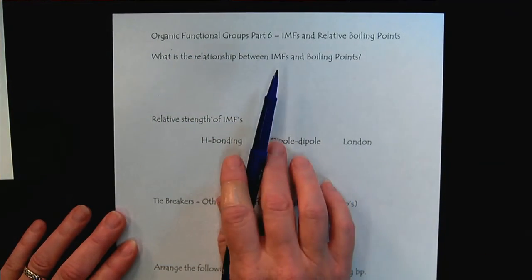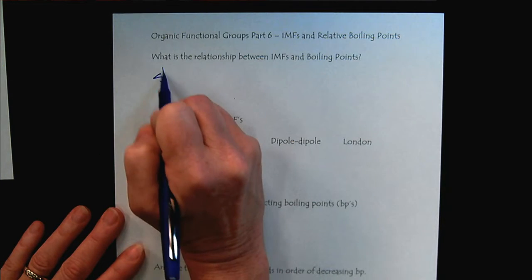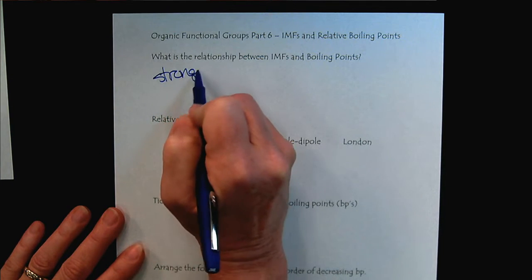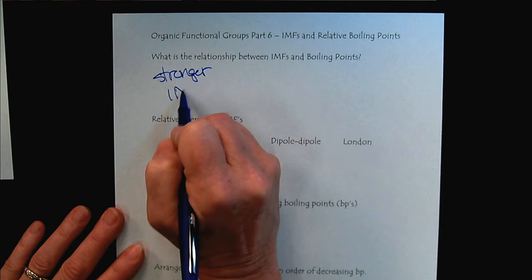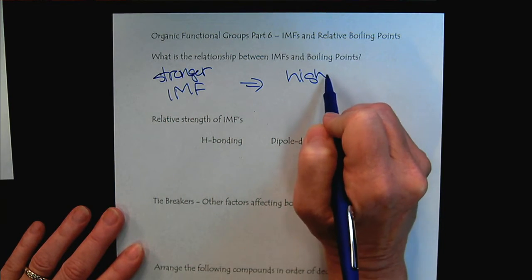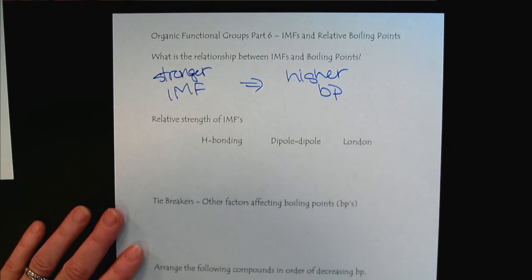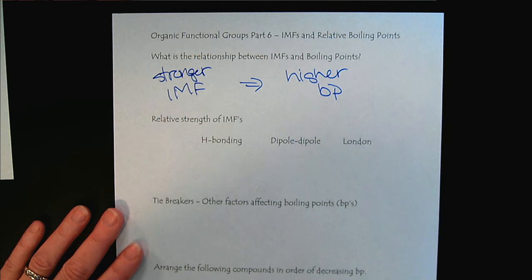Okay, so let's remind ourselves, what is this relationship? We know that the stronger the IMF results in a higher boiling point. And we've talked about that quite a bit in an earlier tutorial, so there's an opportunity to refresh by looking back.